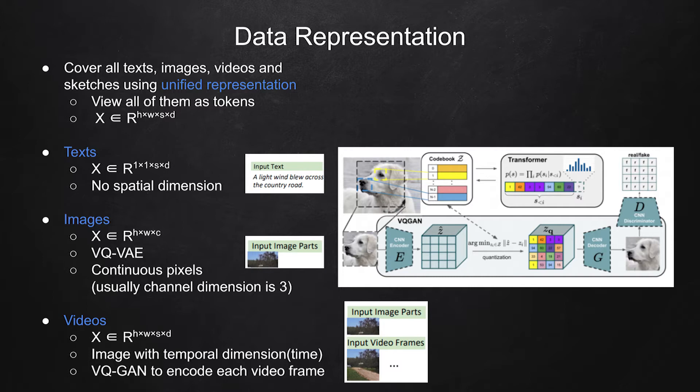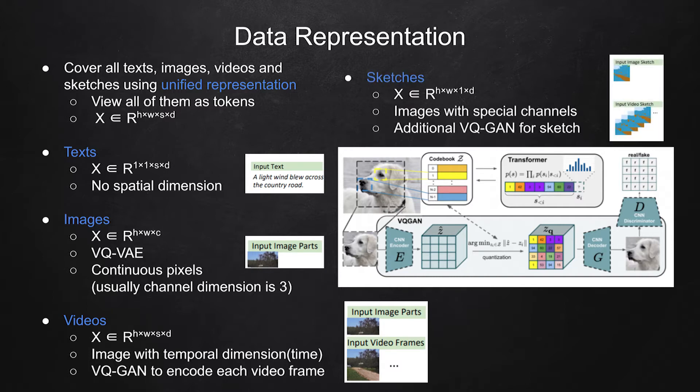In the sketch domain, the authors see image sketches as an image with special channels. Looking at the example of a sketch, this is like a mask for segmentation, where each pixel gets a value C representing a class. By training an additional VQGAN for image sketches, the authors get an embedded image representation R in shape H by W by 1 by D.